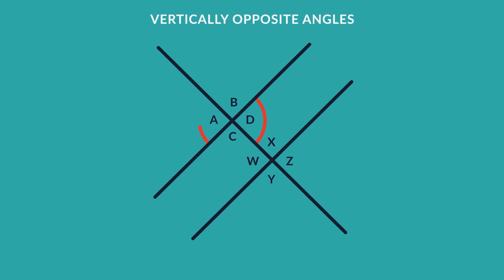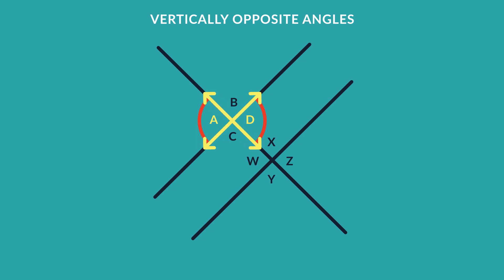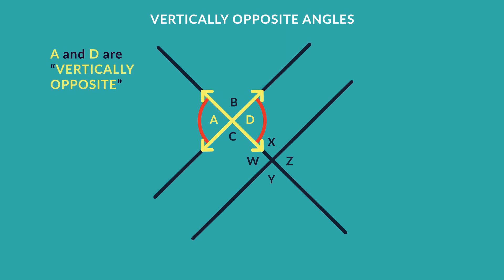Have a look at angles A and D. They are opposite each other and are formed by two lines that form a cross. In geometry, we call these angles vertically opposite angles.